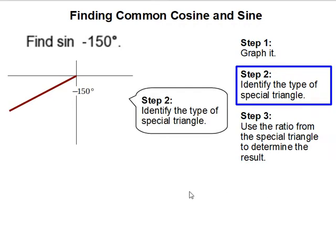Step 2: Identify the type of special triangle. So I'm going to make a triangle out of this. So the remaining degrees here is 30 to make 180. So if this is 30, this is 90, this has to be 60. So I have a 30-60-90 triangle.